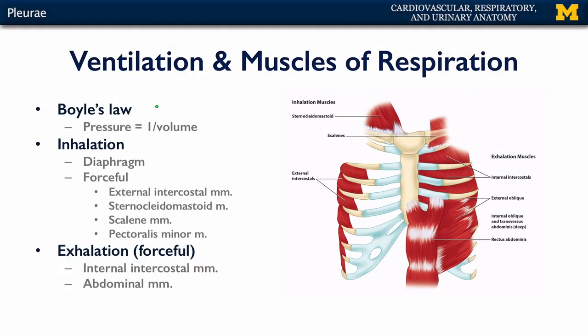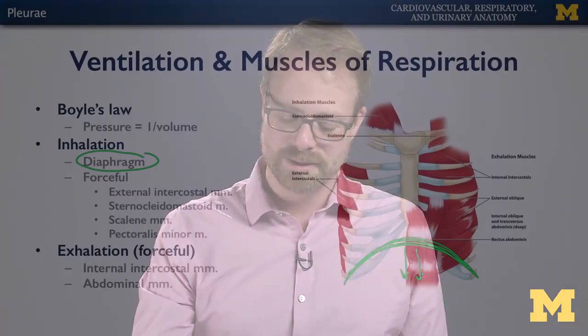There are two processes at play here: inhalation and exhalation. Inhalation is largely controlled by the diaphragm, which sits between the thoracic and abdominal cavities as a domed muscle. When it contracts, it moves inferiorly. Regular tidal breathing — just sitting watching a lecture — moves about 500 to 700 milliliters of air in and out, all driven by the diaphragm. Inhalation is an active process of the diaphragm contracting, and as the diaphragm relaxes, that leads to exhalation.